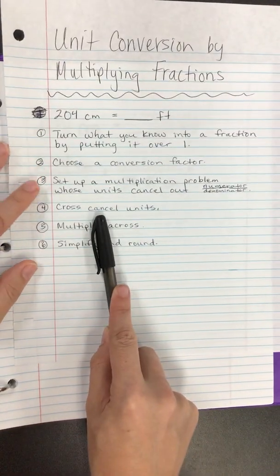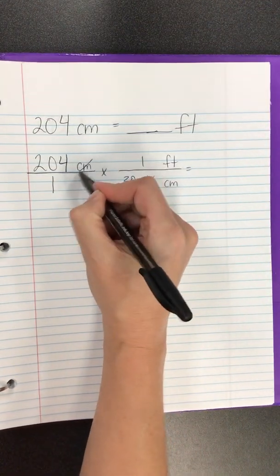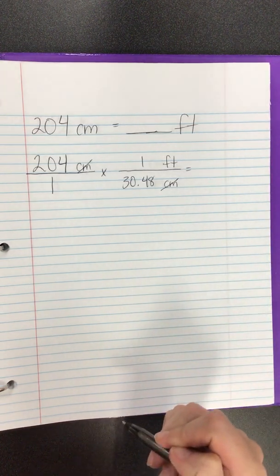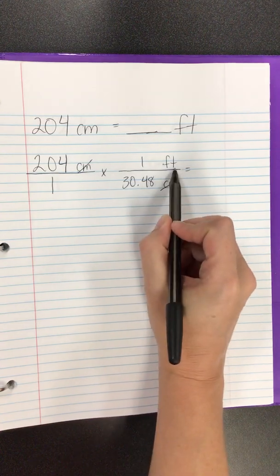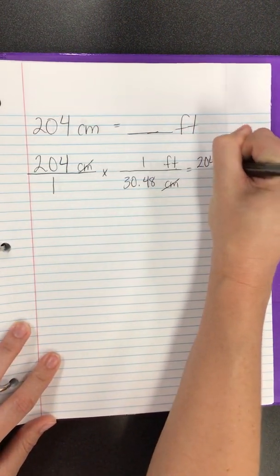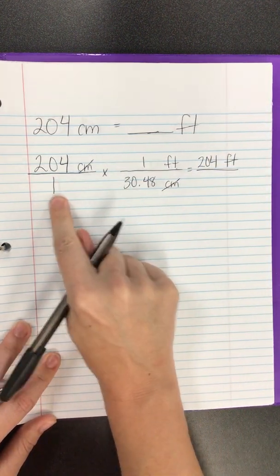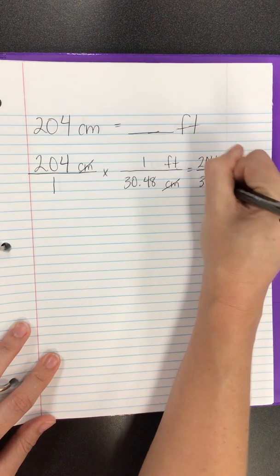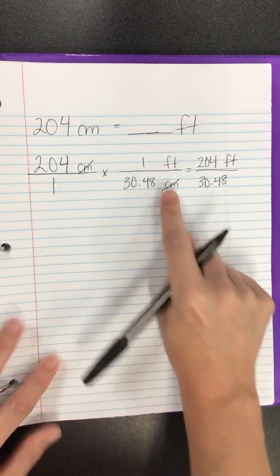Now I'm going to cross-cancel my units. If I have centimeters up top and on the bottom here, those actually cancel each other out, which is good. That's the whole point, is to get rid of centimeters because we're looking for feet. Multiply across. Simplifying round. So 204 times one foot is 204 feet divided by one times 30.48 is 30.48. There are no units here because we canceled those out.